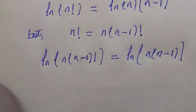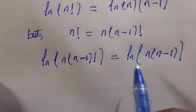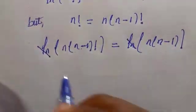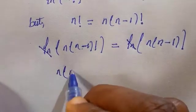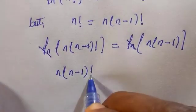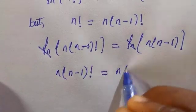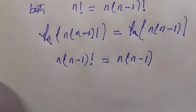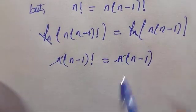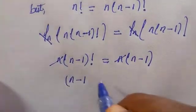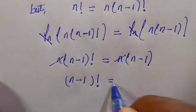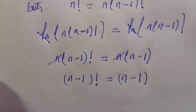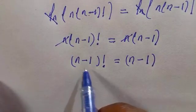Since ln appears on both sides, we can simply cancel it. This gives us: n(n minus 1) factorial equals n(n minus 1). Cancelling n from both sides leaves us: (n minus 1) factorial equals (n minus 1).